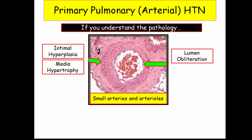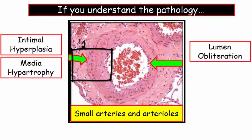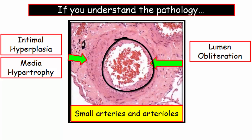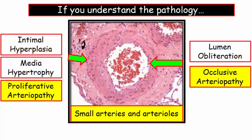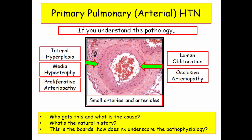This photomicrograph pretty much tells the story of primary pulmonary hypertension, also called pulmonary arterial hypertension. We are looking at a disease of the small arteries and arterioles. Looking at the arterial wall, closest to the lumen you see evidence of intimal hyperplasia and hypertrophy of the media in the adjacent layer. As a result of these proliferative changes, you see a narrowing of the vessel lumen. This is a proliferative process that manifests as an occlusive or obliterative arteriopathy, with the end result being progressive pulmonary artery hypertension.